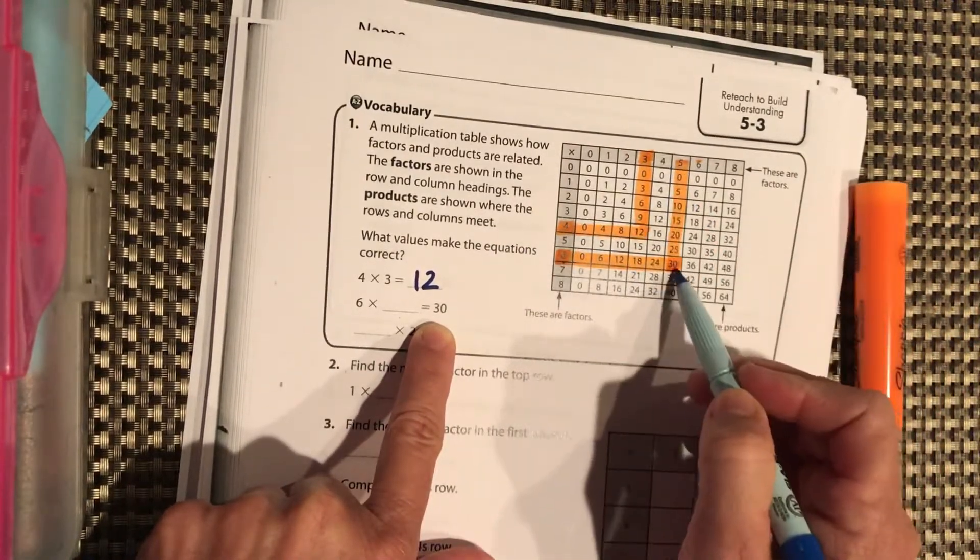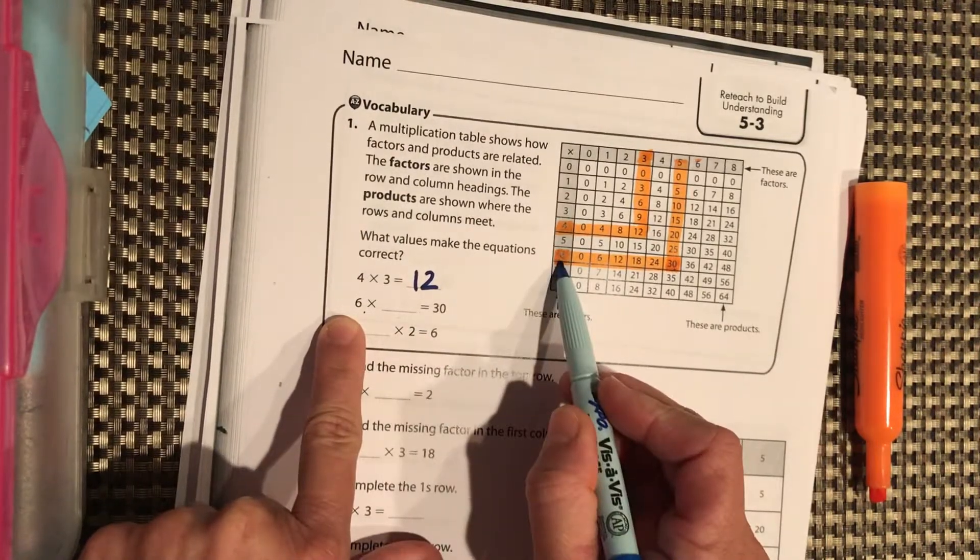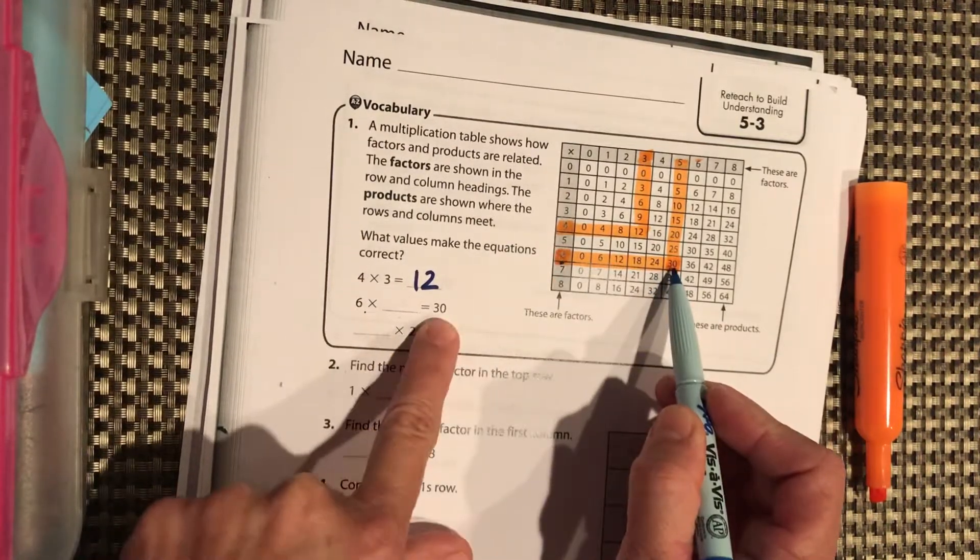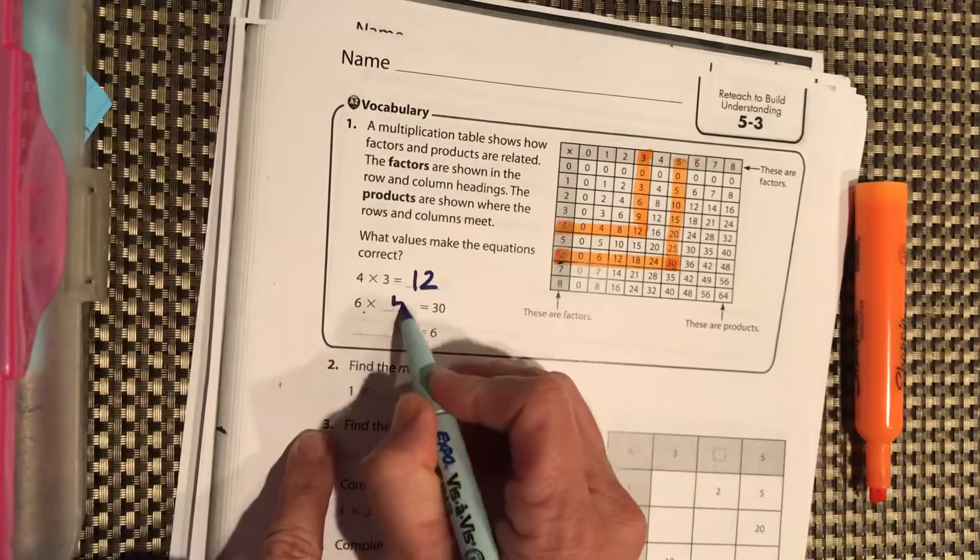So 6 times 5 equals 30. Find your product of 30 in the middle of the table, go up, and it's 6 times 5.